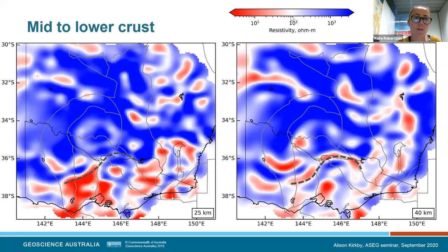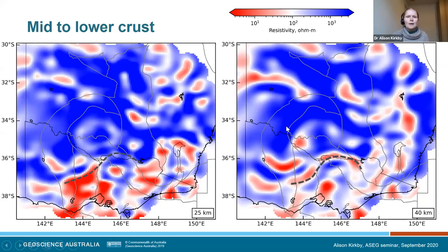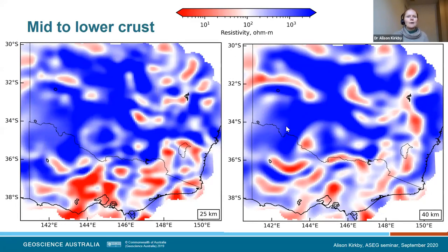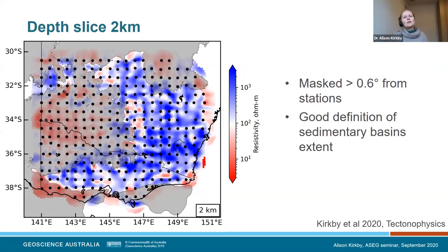Next question from Robert Hewson: does your two kilometre resistivity slice matching the basins in Victoria, SA and New South Wales have a relationship with hydrogeology and deeper aquifers? I don't think we'll be able to get that much detail from Auslamp. What we can see is that in the very upper two kilometres it's conductive, and the lateral extent seems to correspond to where the sedimentary basins are. But you'd probably have to do a more high resolution survey to find that out.